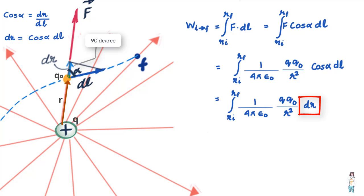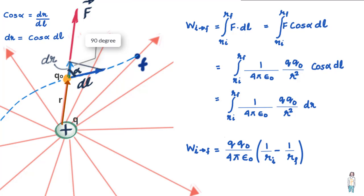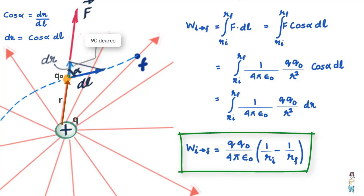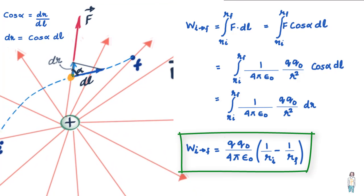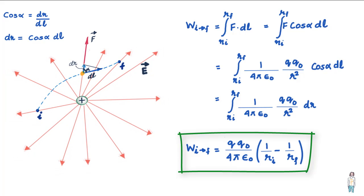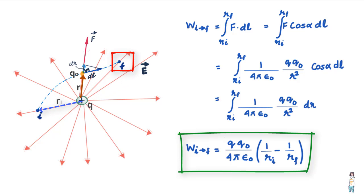In other words, the work done during displacement dL depends only on the change in radial distance dr, and the expression for work done is the same as the one derived earlier. So this expression for work done is valid for any path the test charge takes. In summary, the work done on test charge Q naught by the electric field produced by charge Q depends only on the start and end points R_I and R_F.